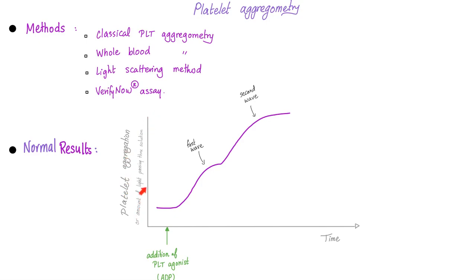The vertical axis also represents the amount of light passing through the solution. Once you add the agonist — such as ADP, ristocetin, collagen, or epinephrine — the platelets aggregate and give you two peaks, like two waves. The first wave is called primary aggregation and the second wave is called secondary aggregation. Primary aggregation depends on the direct interaction of the agonist with its receptor on the surface of the platelet. Secondary aggregation depends on the release and secretion of dense granules from the platelets, including serotonin, ADP, etc.